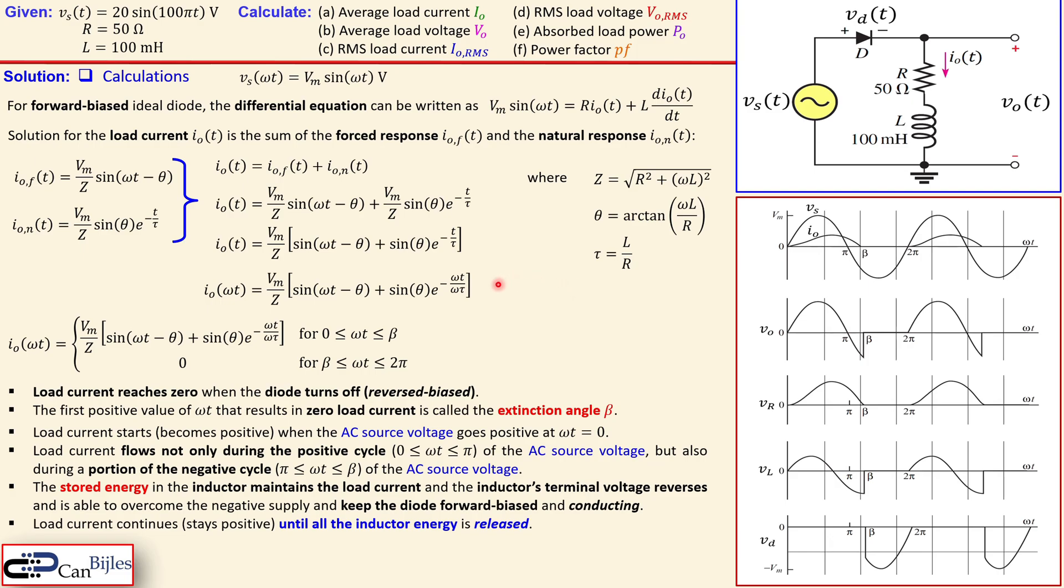This will only last until all the inductor energy is released or dissipated. So we need to have a specific time for that or specific phase and that is actually given by this beta or distance between the π and the beta. And that is the reason for having this small extinction here after this beta.